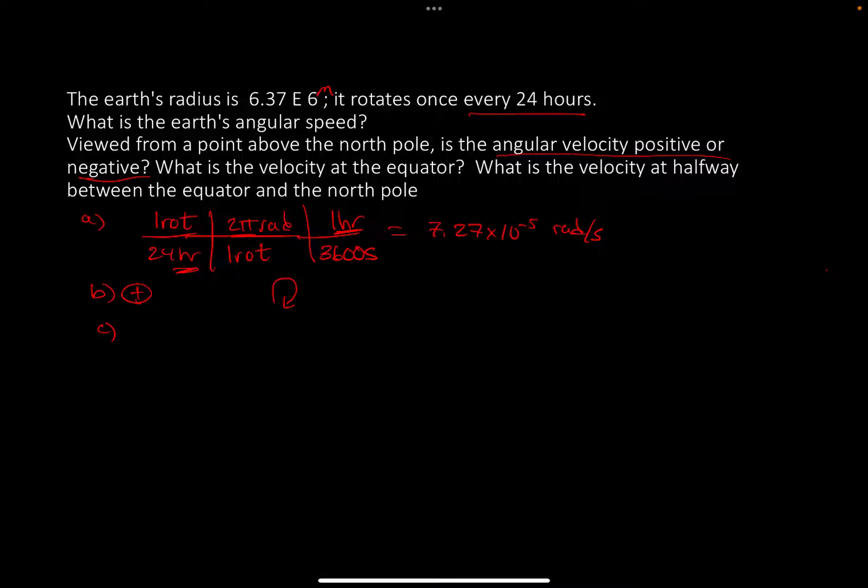The speed at the equator, I'm going to take this speed, and watch what I do. I'm going to take 7.27 times 10 to the minus 5. That's rads per second. I want to convert this to meters per second. I can say that there are 2 pi rads in one revolution. As the Earth revolves around, it's going to go through one full revolution of a circle.